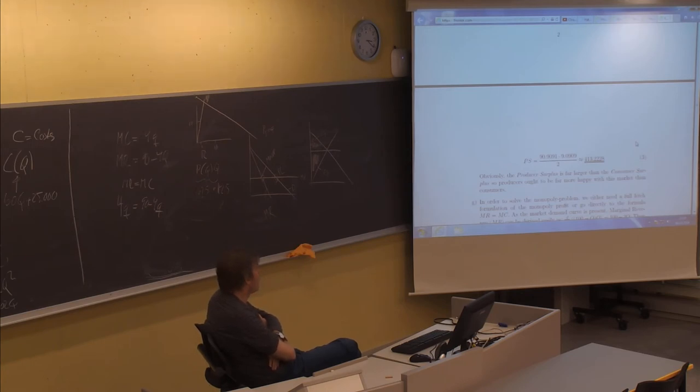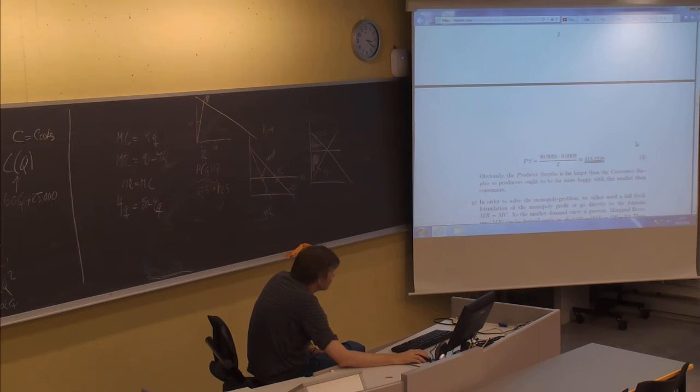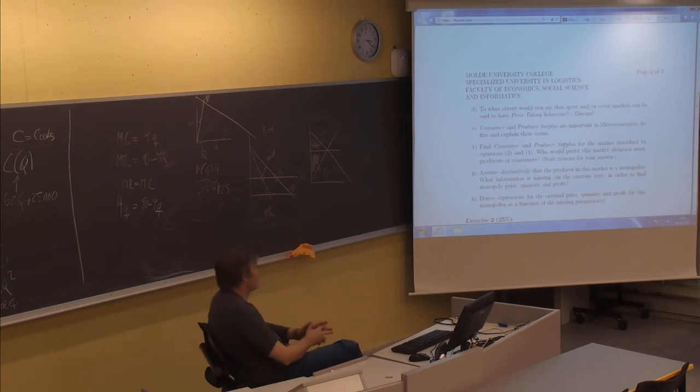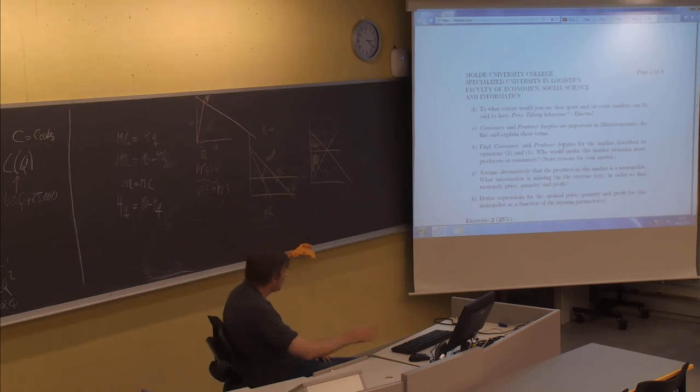Is it necessary to show the numbers? It's not necessary, but it says find consumer and producer surplus. I will interpret that we're looking for the numerical values as well. But of course, you might as well add a figure to show what it means. That's not bad.